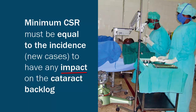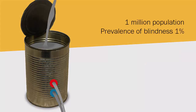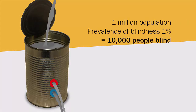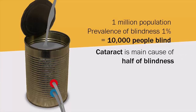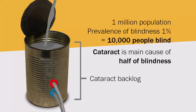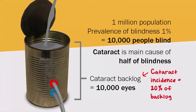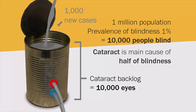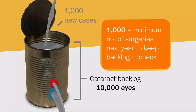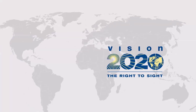Let's put some numbers into our leaky can. A one million population with a prevalence of blindness of one percent means there are 10,000 people with a visual acuity of less than 3/60 in the better eye. If cataract is the main cause of blindness in half these people, then the cataract backlog can be calculated to be 5,000 people, or 10,000 eyes. It has been calculated that cataract incidence is about 20% of the backlog, so we can expect about another 1,000 people to have cataract by next year. If no treatment is carried out and there is no mortality, by next year there will be 6,000 people in the backlog. So the minimum number of surgeries that must be done in the next year is 1,000 to keep the backlog in check.